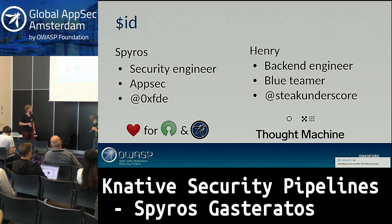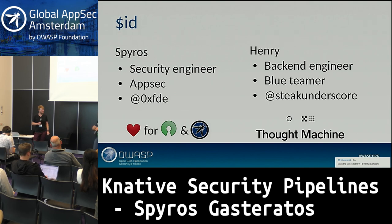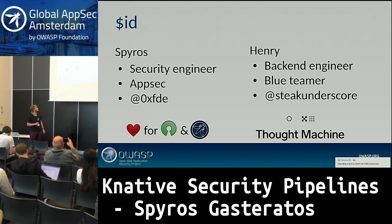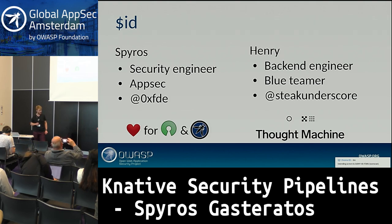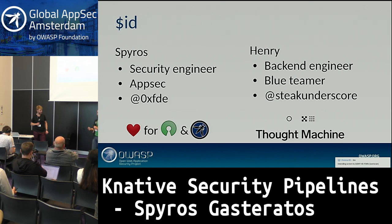I'm Spiros. I like to say I do security engineering. More often, I just chase people to fix things. I focus on application security — that's why OWASP, and that's my Twitter handle. I work for a London-based financial technology company called Thought Machine. They pay the bills, and I contribute to open source as much as I can. I've been doing OWASP things for many, many years now.